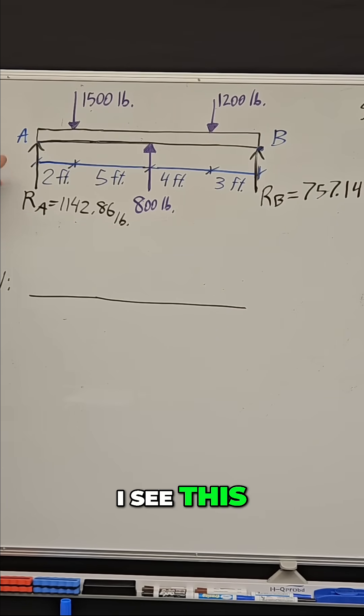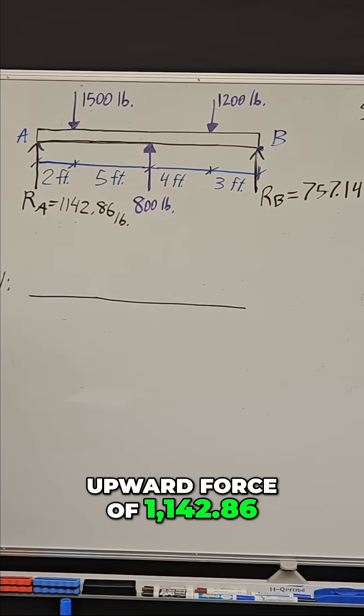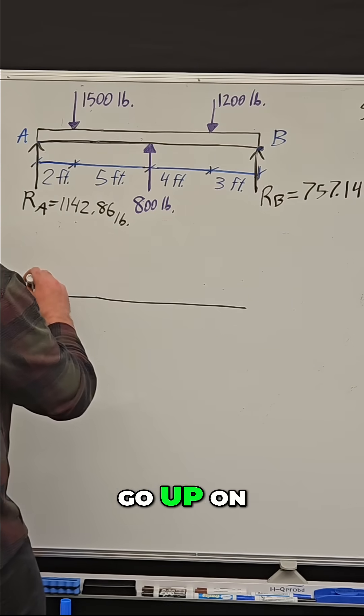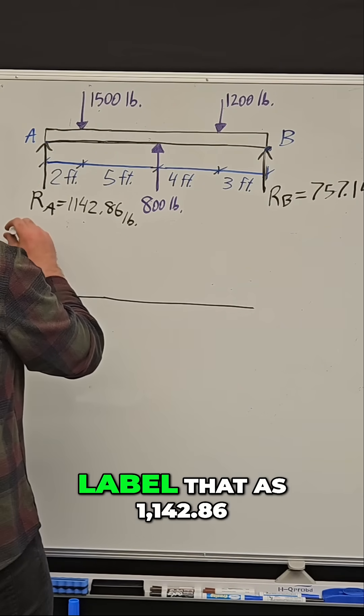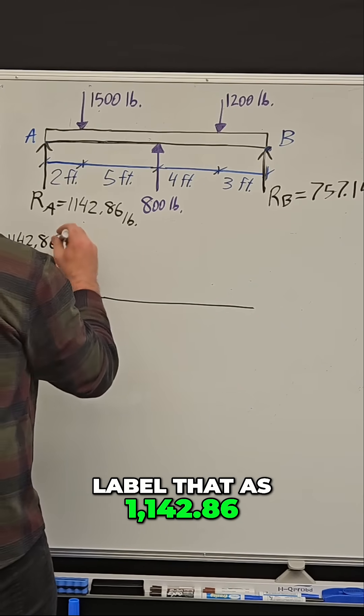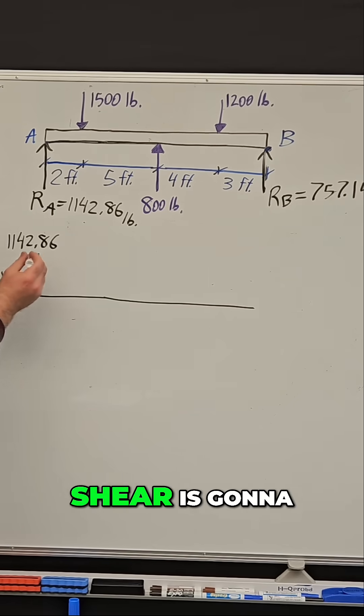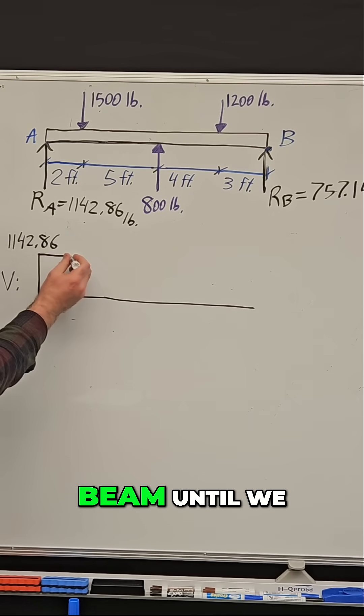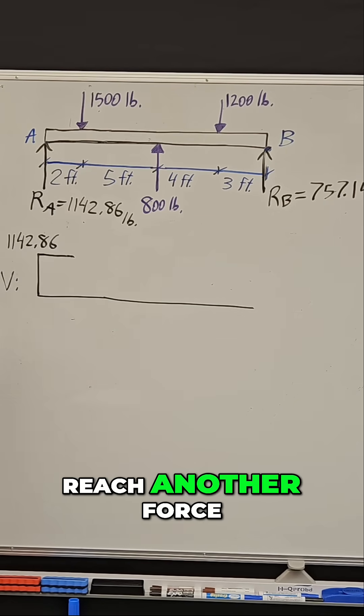Let's start with the very left side. I see this upward force of 1142.86, so we go up on our shear diagram and label that as 1142.86. That shear is going to be constant in this beam until we reach another force.